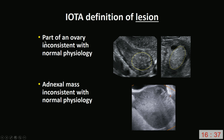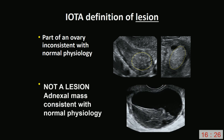This here is a completely solid adnexal mass — it's not compatible with normal physiology. However, a hemorrhagic corpus luteum is not a lesion, because a hemorrhagic corpus luteum is consistent with normal physiology.